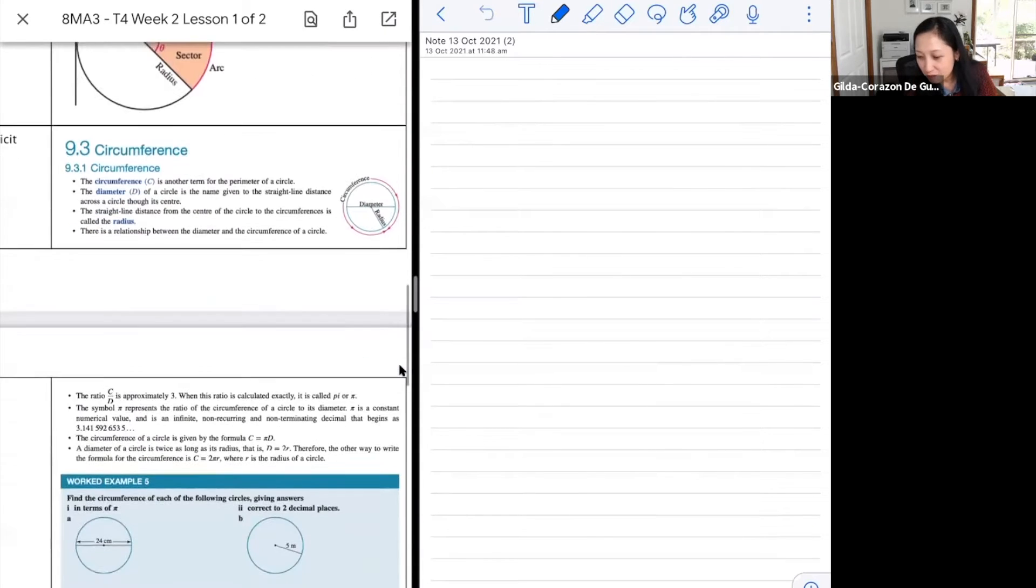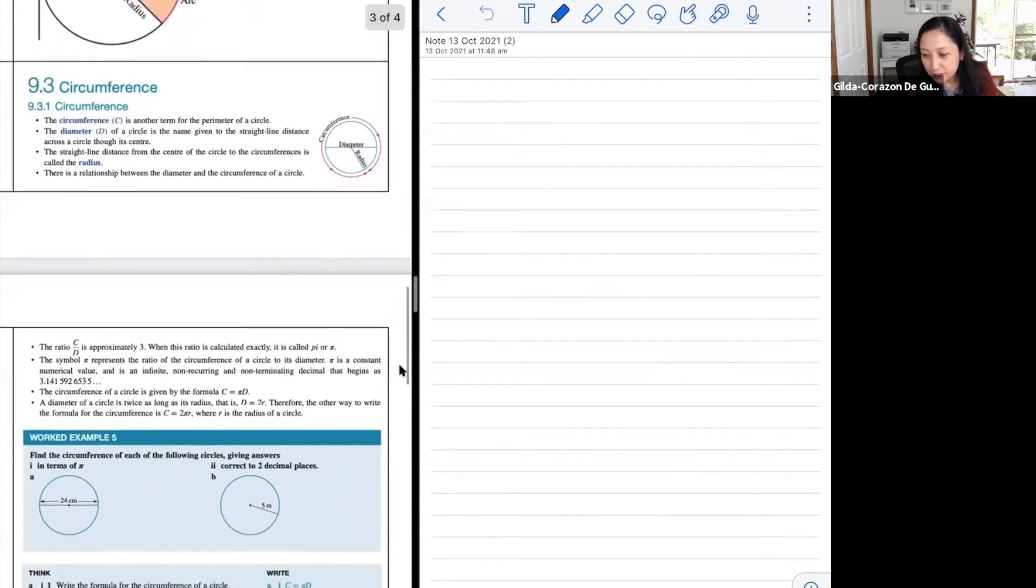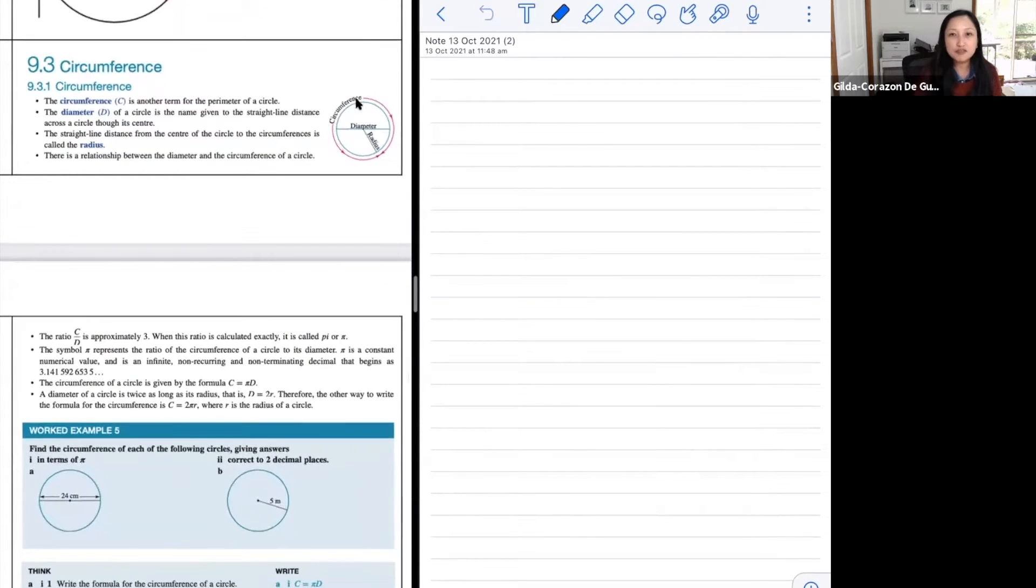Look at circumference. So what we're measuring here would be imagine that you've got a string and you put that around that circle and you unfold that string, that length there is what you call your circumference. So that's what we're measuring. How much string do you need for you to go around that circle, that circumference.